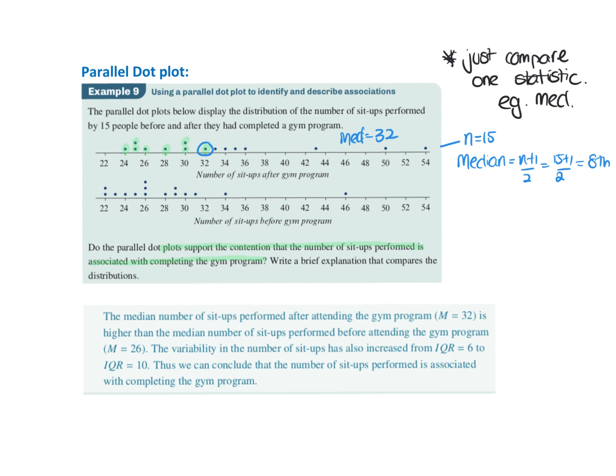And then I could do, it was still 15 people, so we do 8 for the bottom one. So 1, 2, 3, 4, 5, 6, 7, 8. We can see that the median is 26 for this one. The median number of sit-ups performed after the gym program was 32, which is higher. So we've got that changing word, which is good.